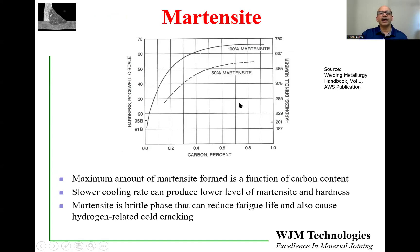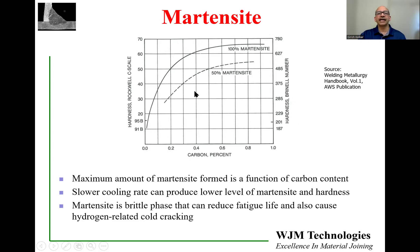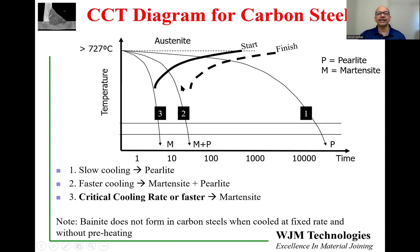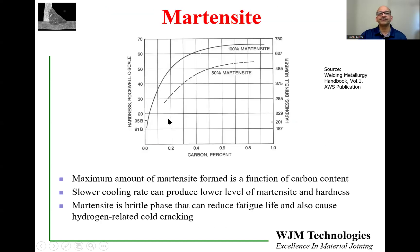How much martensite forms and how hard it will be can be gauged from a hardness vs. carbon percentage chart. For a given carbon content, you can read off the maximum hardness corresponding to full martensite formation. For example, with 0.4% carbon, if the measured hardness is close to 62 HRC, all austenite was transformed to martensite, meaning the cooling rate was faster than the critical rate. Martensite is a very brittle phase that can reduce fatigue life and cause hydrogen-related cold cracking.